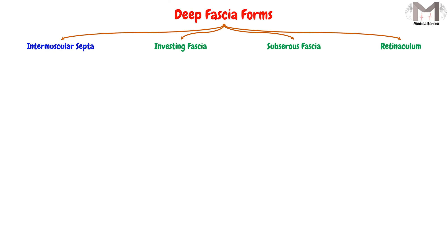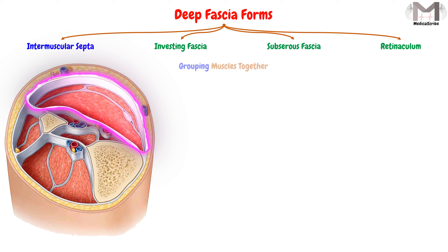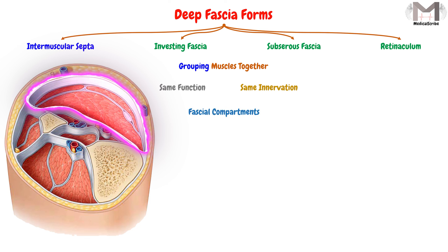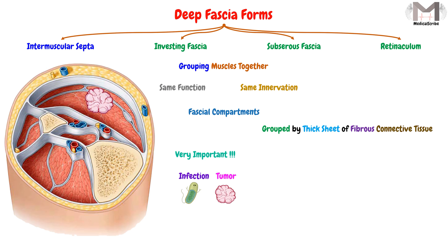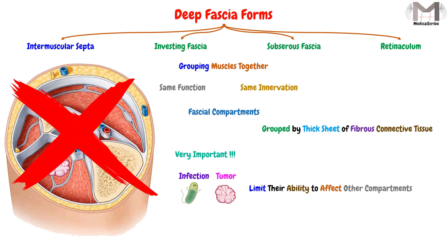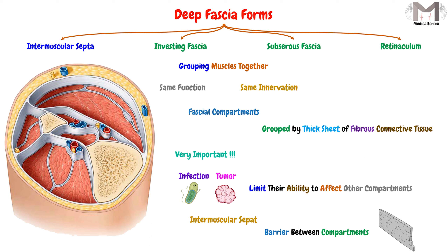The first form is the intermuscular septa. This form of deep fascia will group many muscles that either share the same function or have the same innervation. These septa will group them together, making what we call fascial compartments — a group of muscles surrounded by a thick sheet of fibrous connective tissue. These compartments are very important because if infection or a tumor occurs in one compartment, the intermuscular septa work as a barrier to limit its spread to other compartments.